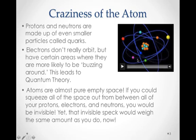Craziness of the atom. Protons and neutrons are made up of even smaller particles called quarks. Electrons don't really orbit, but they have certain areas where they're more likely to be buzzing around. This is quantum theory. And atoms are almost pure empty space. If you could squeeze all of the space out from between all of the protons, electrons and neutrons that make you up, you would be invisible. And yet that invisible speck would weigh the same amount as you do now. Crazy stuff.